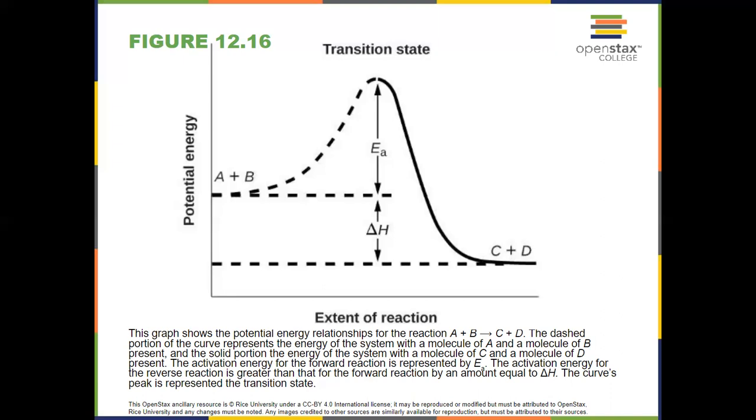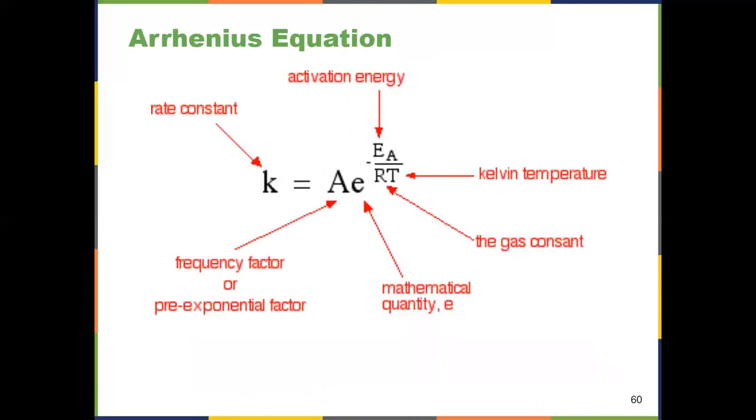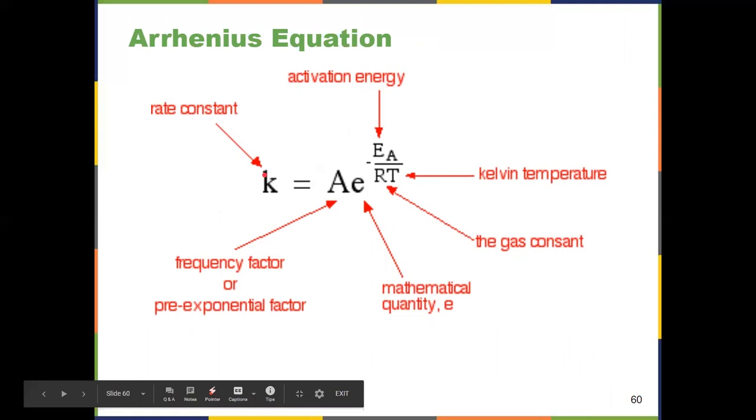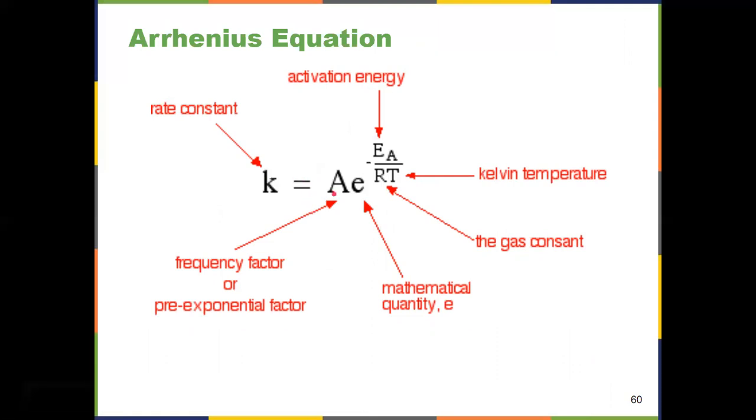You can also relate activation energy to the rate constant itself. Every reaction has a specific activation energy and a specific rate constant. And that's done with this guy. It's known as the Arrhenius equation. Rate constant K is equal to a frequency factor, which is unique to each reaction, e the mathematical function. And then right there, we've got activation energy, gas constant, and Kelvin temperature.